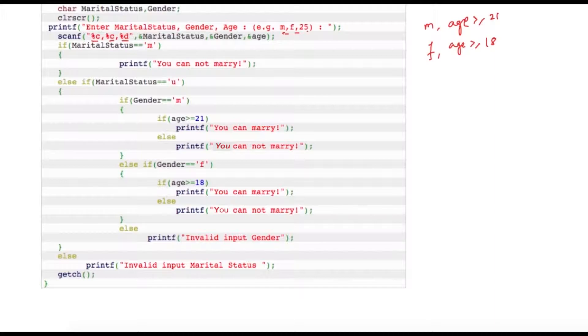Suppose user enters in a different format, in that case program might have a logical error or it can just print invalid marital status. You will understand it once I explain you the logic. For now let us assume that user has to enter in this format. Suppose user has entered marital status as M, which means the user is already married, so we are just simply writing 'you cannot marry' because he's already married.